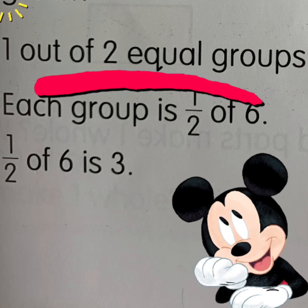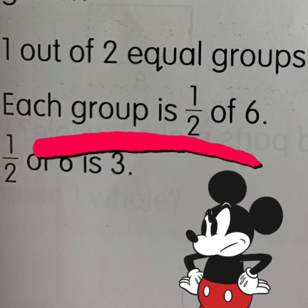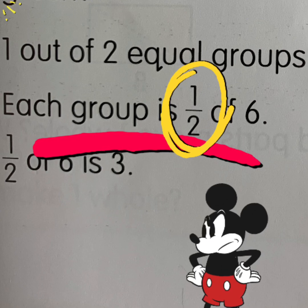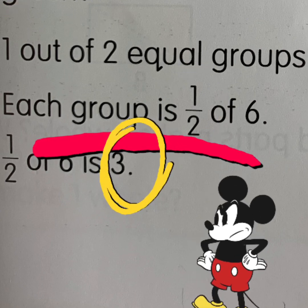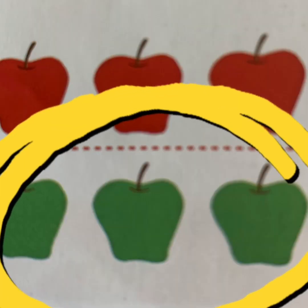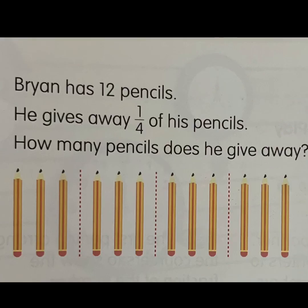Out of these two groups, one group is green. One out of two groups are green, which means half of six. How we write half — we write half as one by two. So what is one by two of six apples? Half of six apples is three. Well done! So half of six apples is three — therefore we have three green apples.